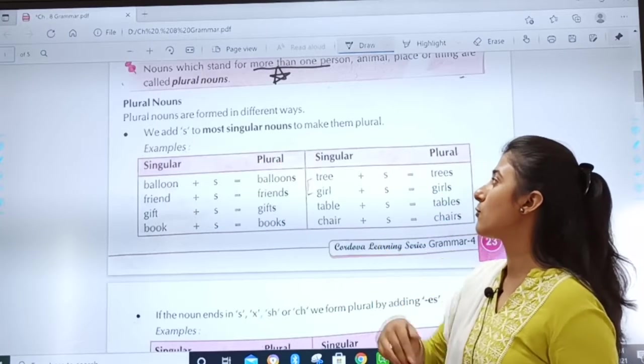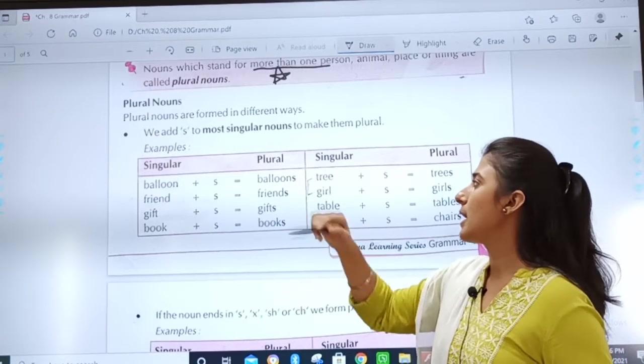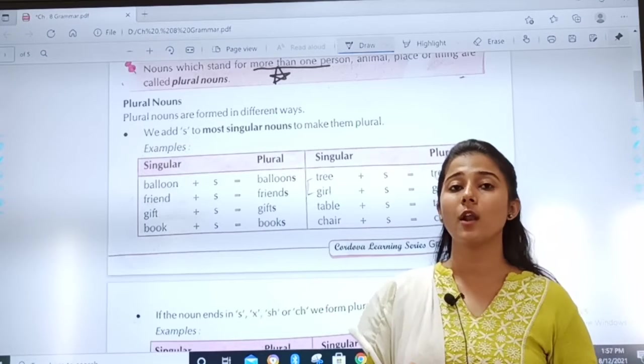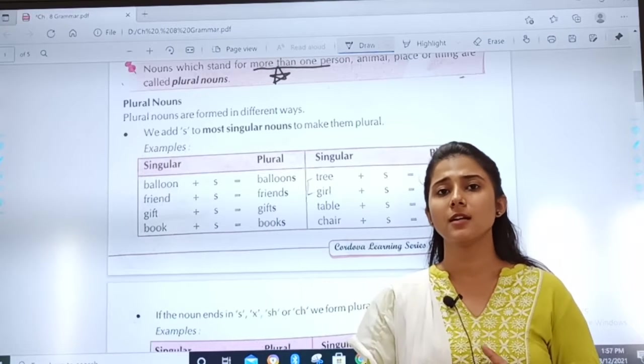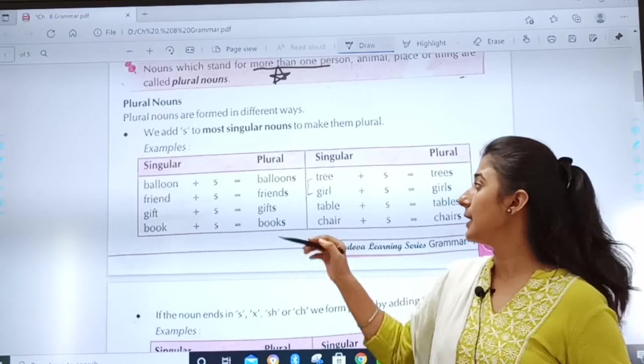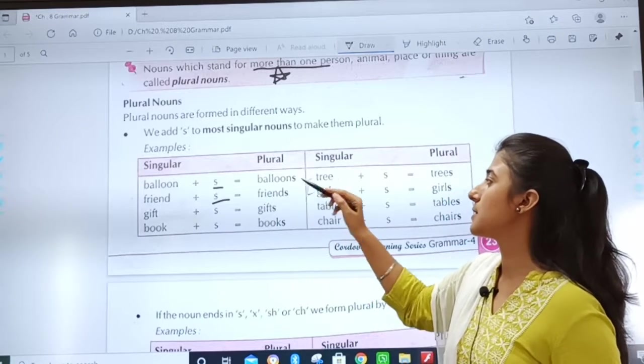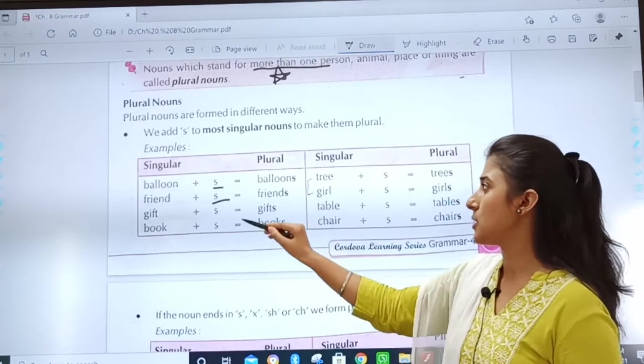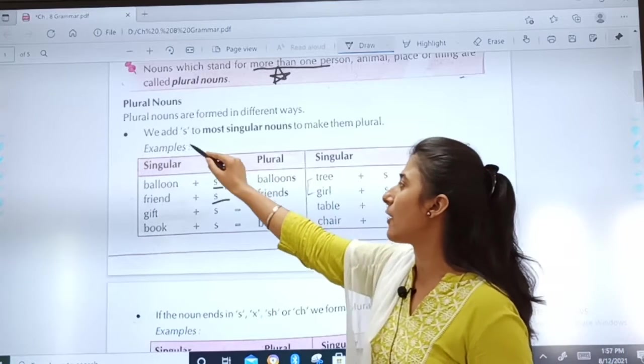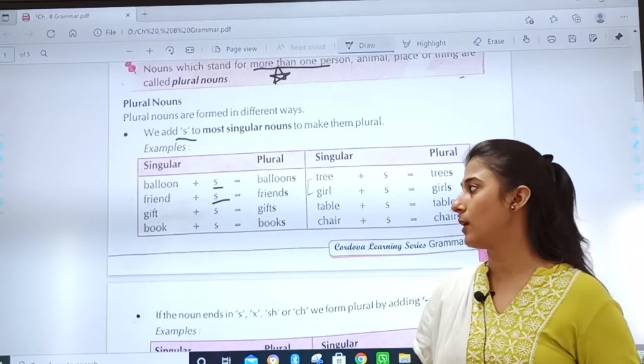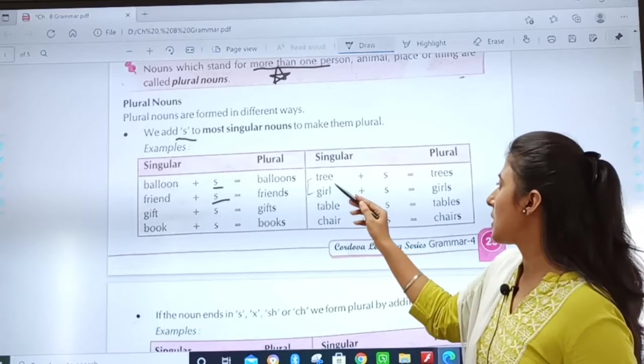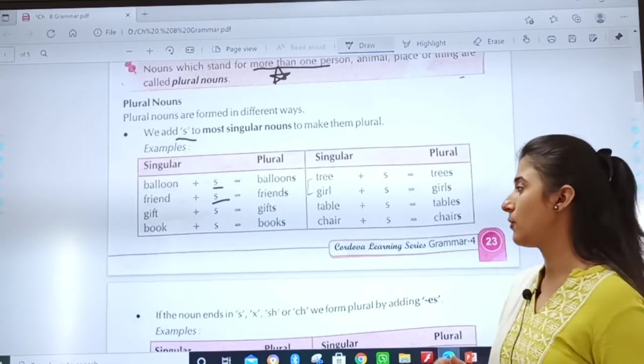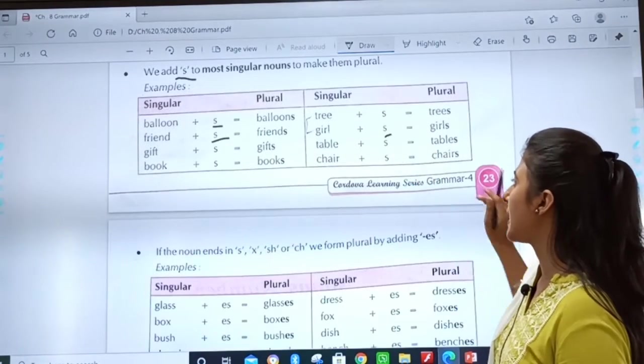Plural nouns are formed in different ways. We add S. If we are asked, what will be the plural of balloon, friend? So, we simply add an S. And it becomes plural, balloons, friends. So, this box is very easy that we have to add S to most singular nouns, right? Tree become trees, girl becomes girls, right? Just by adding a S.